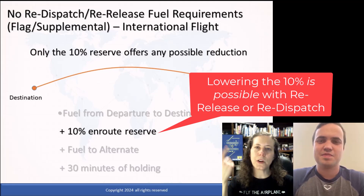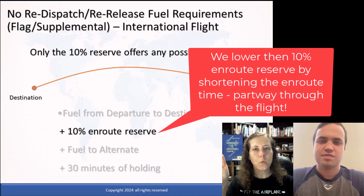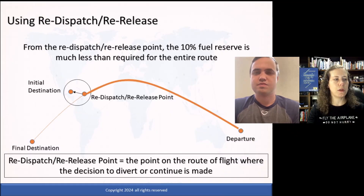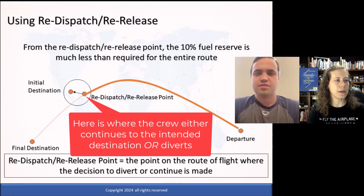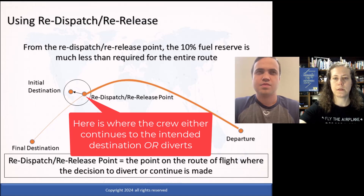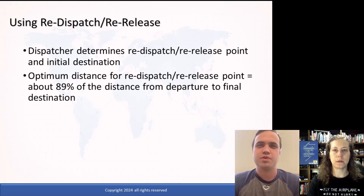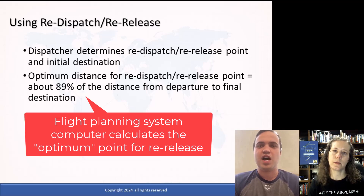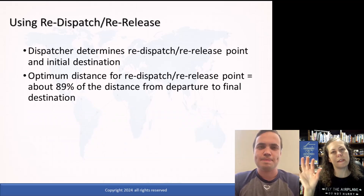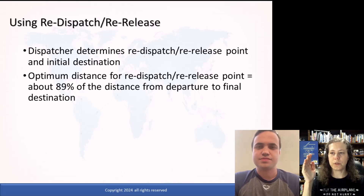We're going to talk about the optimum point to do the re-release at. Once you have an optimum point, you can free up some of that fuel and use it for payload instead. The re-dispatch or re-release point is the point on the route of flight where the decision to divert or continue flying is made. The optimum distance is around 89% downrange. Our flight planning system allows us to choose the cities we want, and it will typically pick along the route at 89%, but you still have to watch your fuels and make sure it gives you the optimal amount.